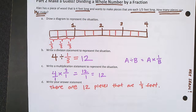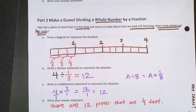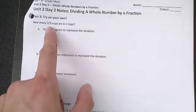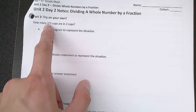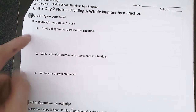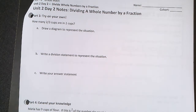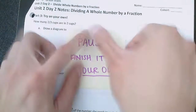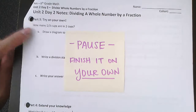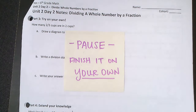Now that we've done this one together as a class, turn the page. For this next question, instead of one-third, it's asking how many two-thirds cups are there in two cups. Pause the video, try this on your own, and continue after you've finished.